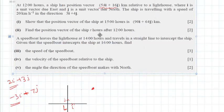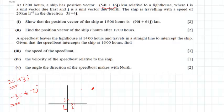The ship is traveling with a speed of 20 kilometers per hour in the direction of 3i plus 4j. What does 3i plus 4j represent? For every 3 steps horizontal, there are 4 steps vertical — if it moves 3 kilometers horizontally, it will move 4 kilometers vertically upward.